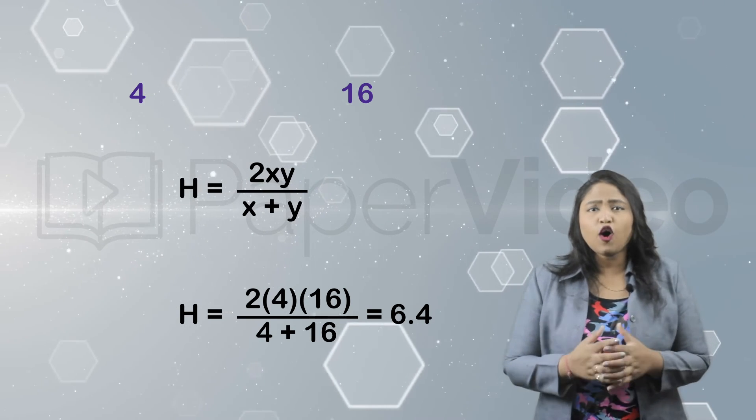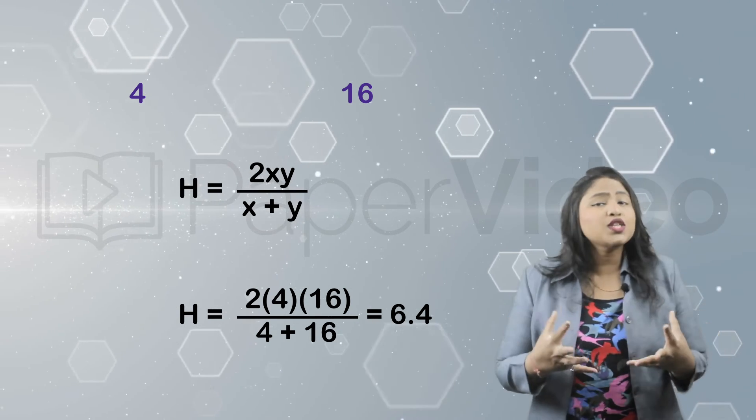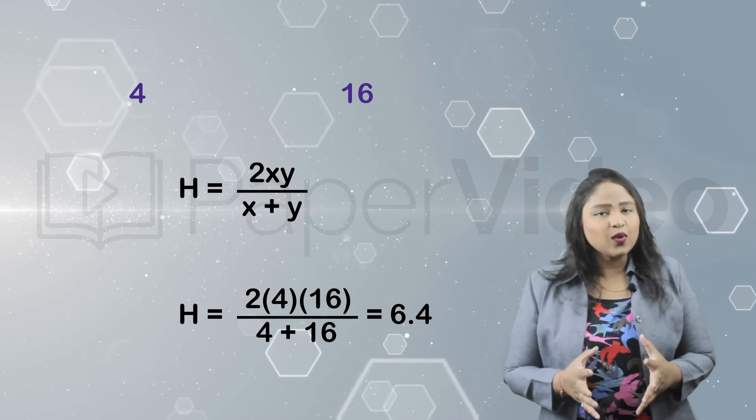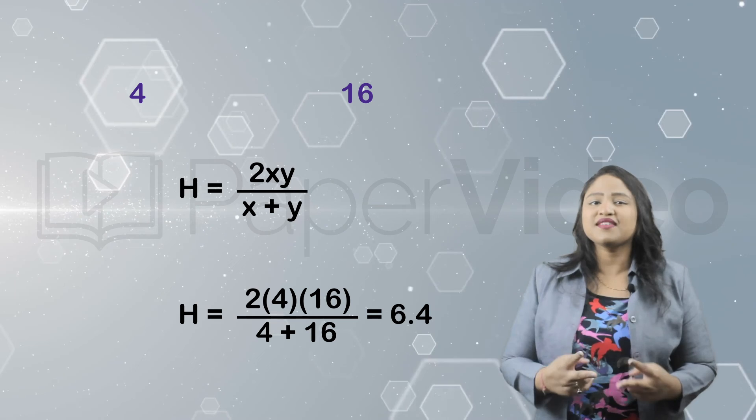The harmonic mean of 4 and 16 comes out as 6.4. So this is how we calculate the harmonic mean of two given quantities.